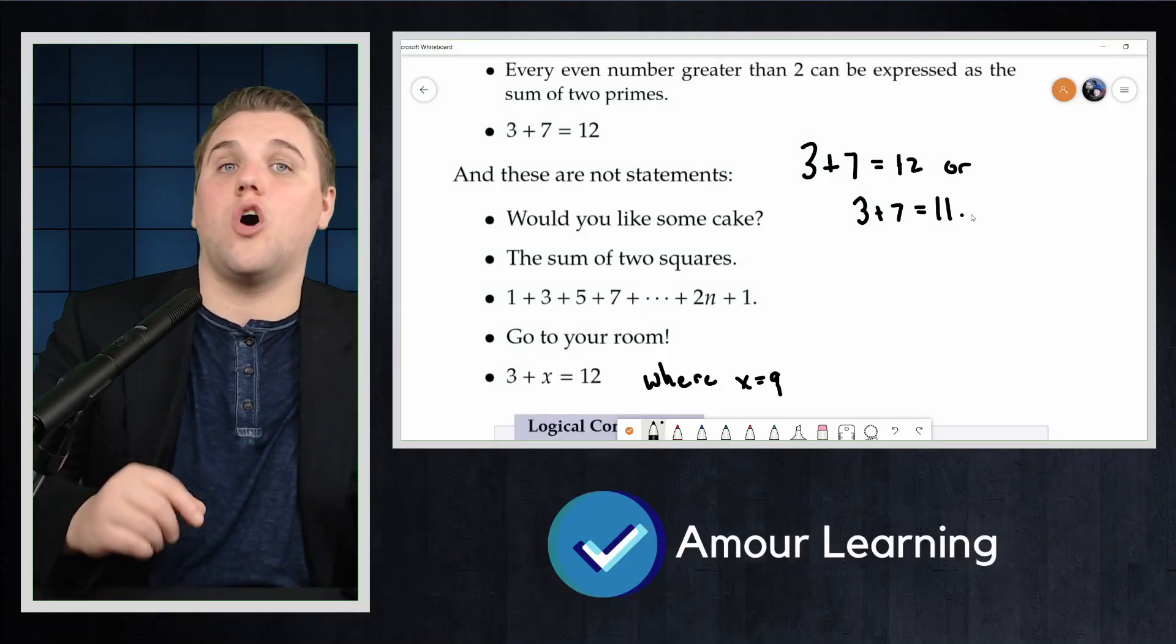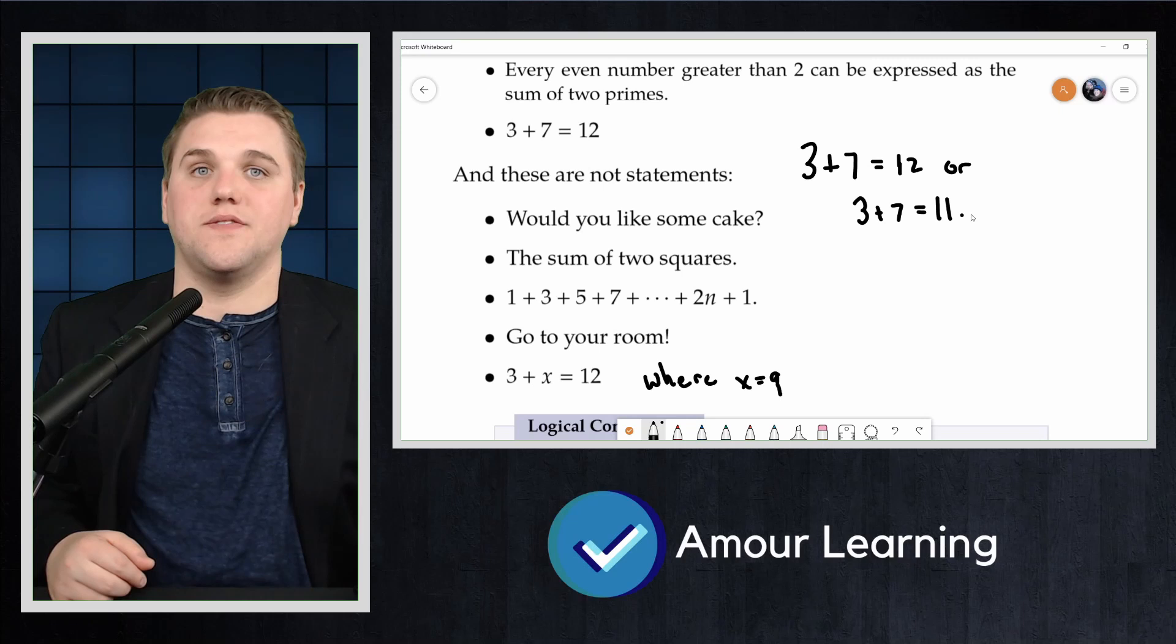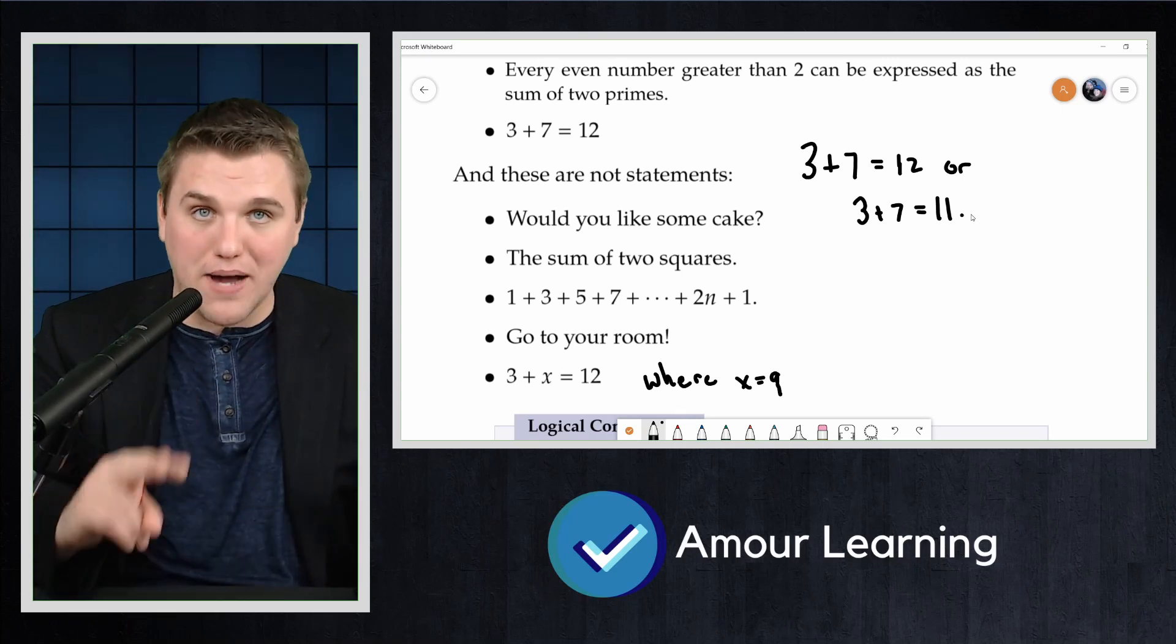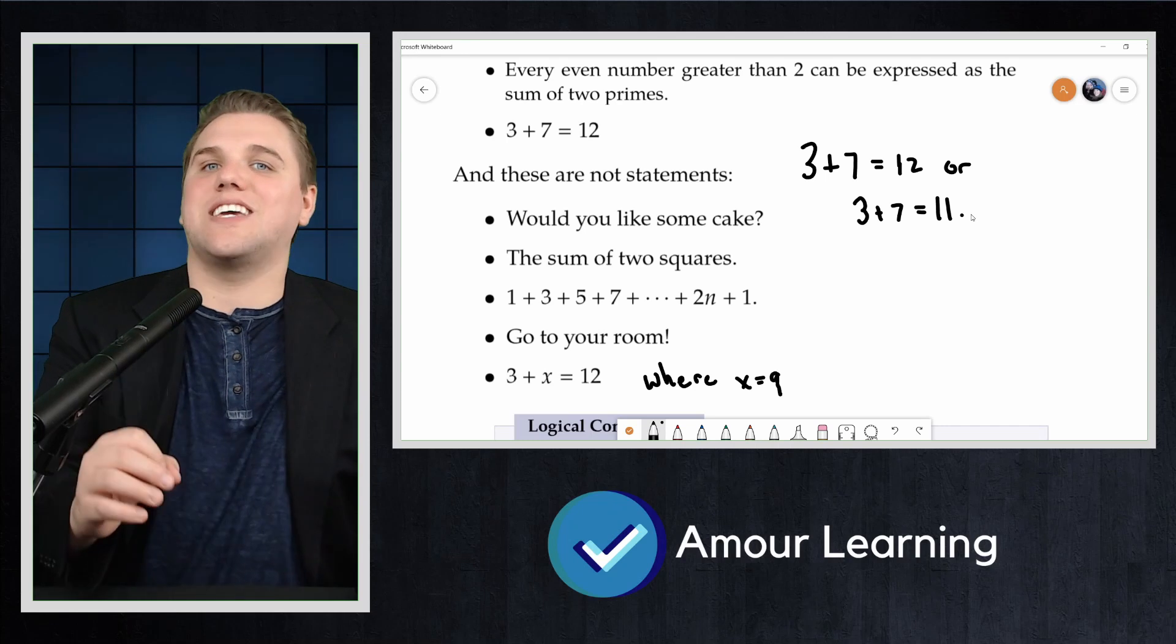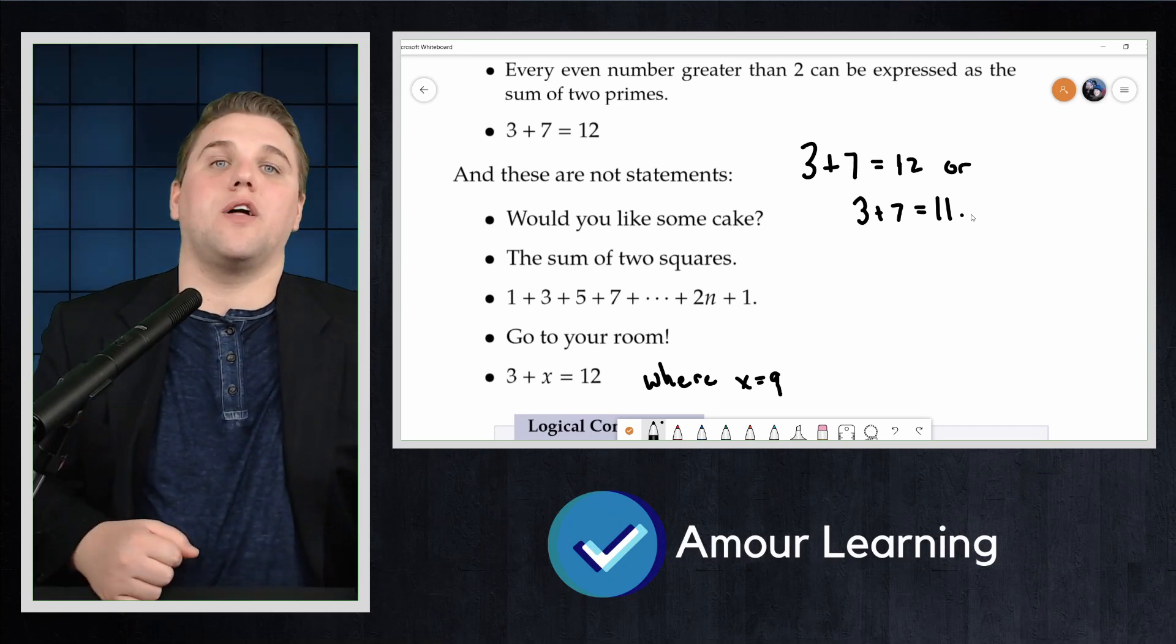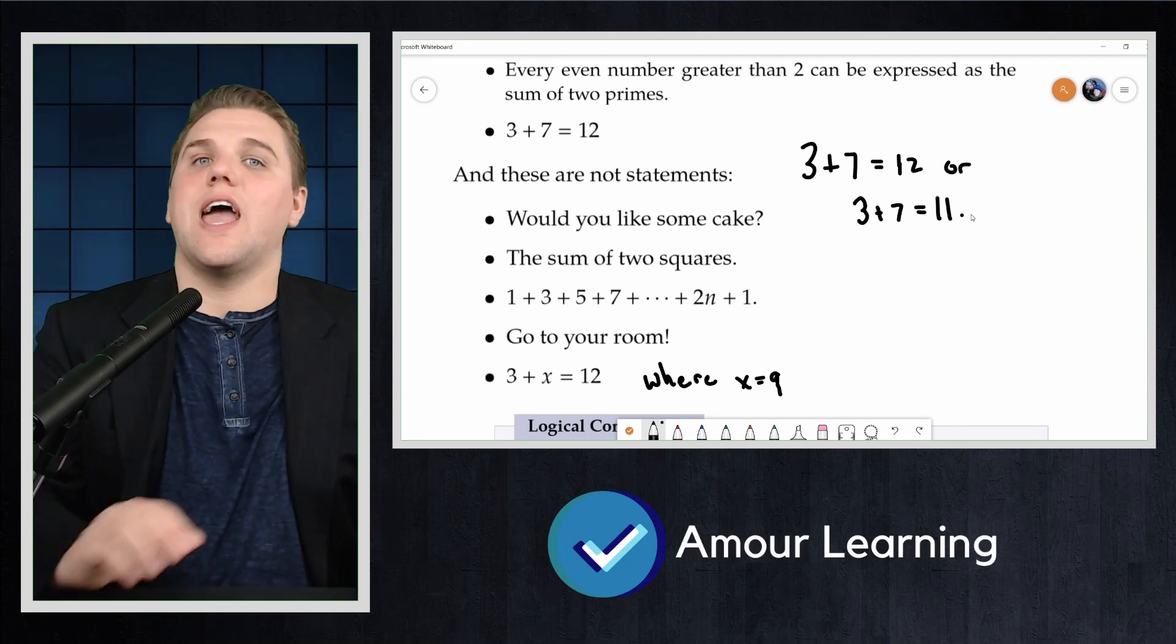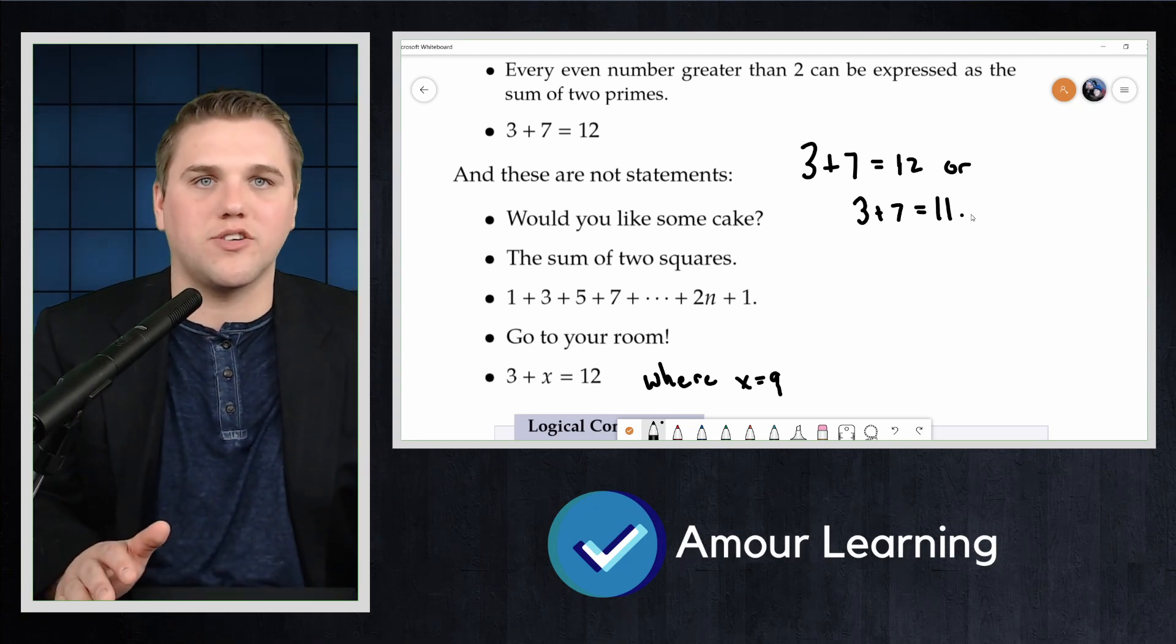The first four connectives here are called binary connectives because they connect two statements, binary two. While the last connective NOT is an example of a unary connective since it applies to a single statement and doesn't combine multiple smaller statements.